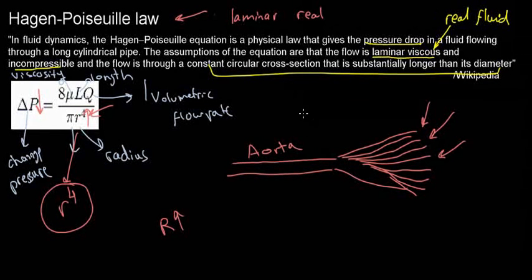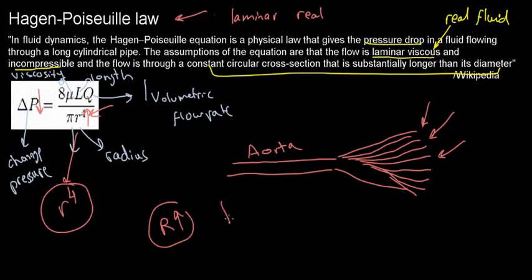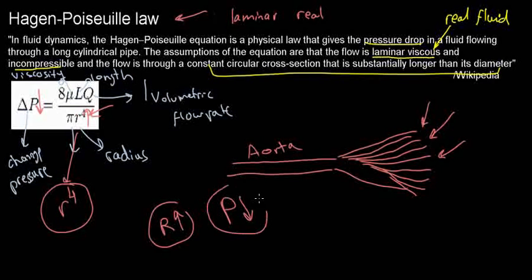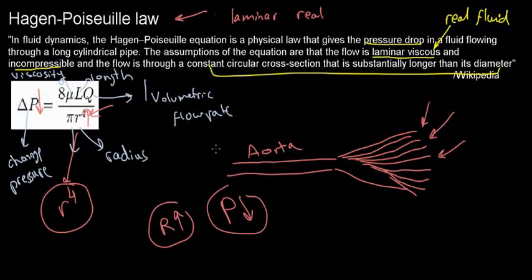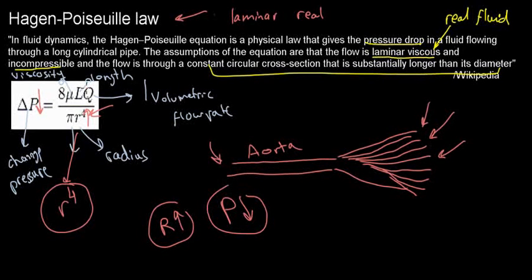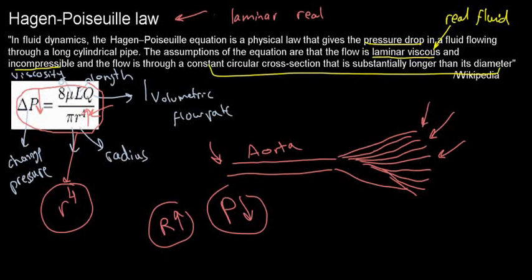This is the take-home message from the Hagen-Poiseuille law for laminar flow of real fluids: when the radius goes up, you experience a pressure drop. This is really what happens day-to-day with the flow of blood in our body. The key is understanding how pressure relates to radius — you don't need to memorize the equation itself. Hopefully this was helpful. See you in the next video.